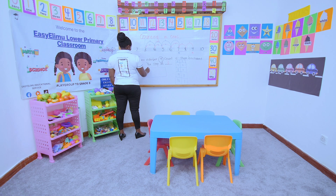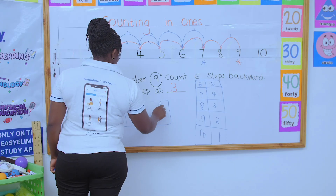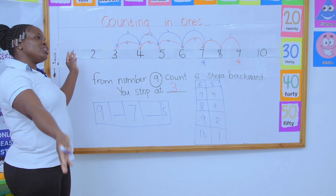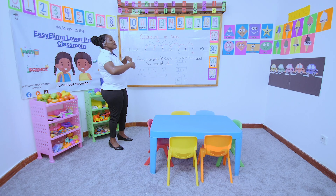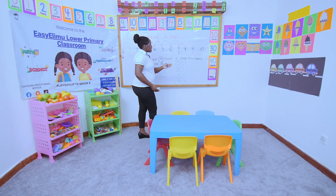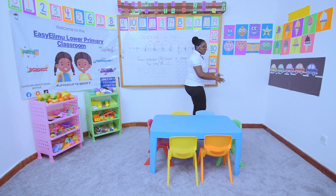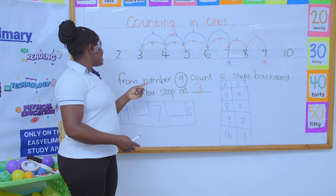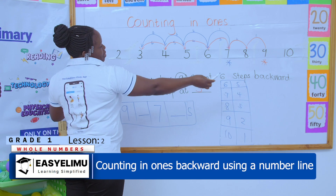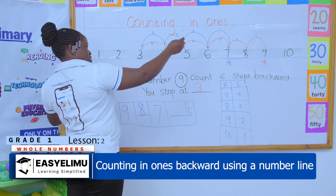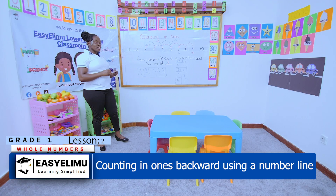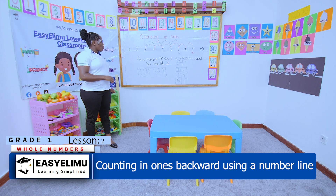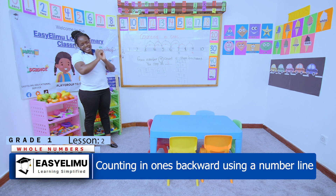If you are told to fill in the missing numbers — for example, nine, dash, seven, dash, five — use the number line. We don't overturn the number line; what changes is the direction you move. Going backward from nine: before nine is eight, before eight is seven, before seven is six. This makes it very easy to fill in missing numbers using the number line when counting in ones.